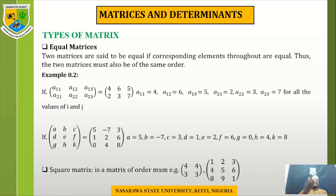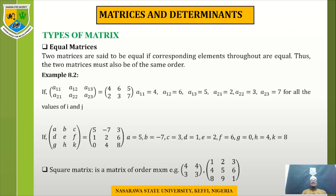The next slide covers the types of matrix. The first type is equal matrices. For two matrices to be equal, two conditions must be met: the corresponding elements throughout must be equal, and the two matrices must also be of the same order.